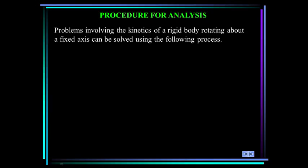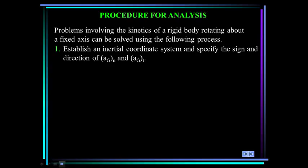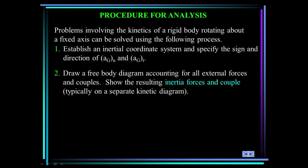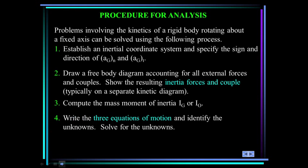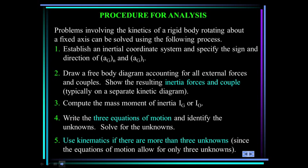Let's establish a procedure for analysis. First, establish an inertial coordinate system and specify the sign and direction of the normal and tangential components of the acceleration of the mass center. Draw a free body diagram accounting for all external forces and couples. Show the resulting inertial forces and couples, typically on a separate kinetic diagram. Compute the mass moment of inertia I_G or I_O. Write the three equations of motion and identify the unknowns. Solve for the unknowns. Use kinematics if there are more than three unknowns.